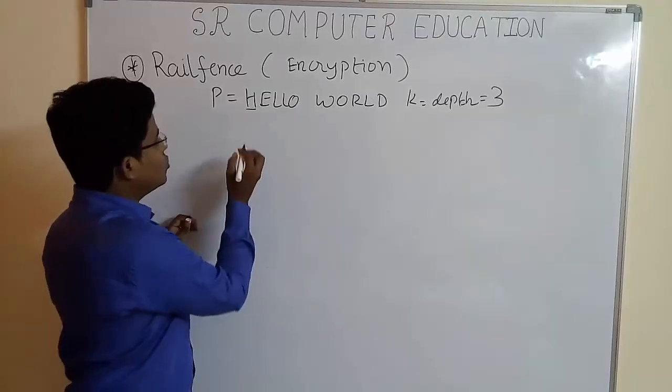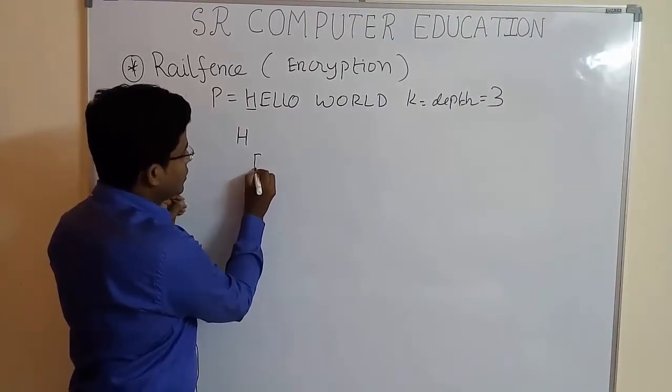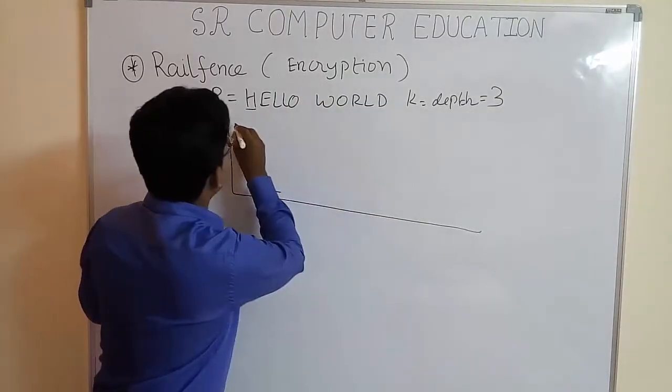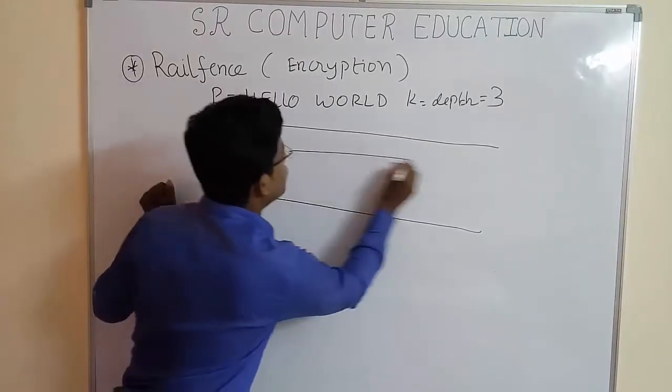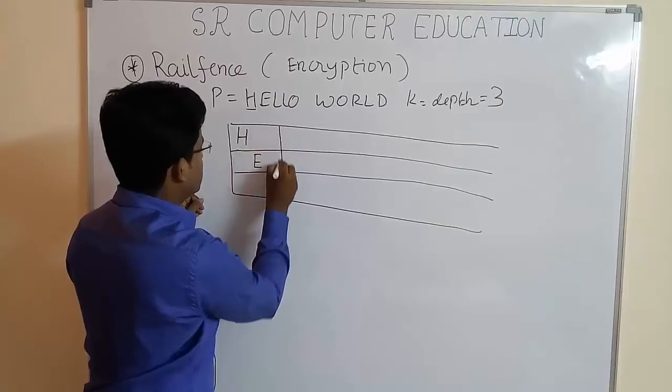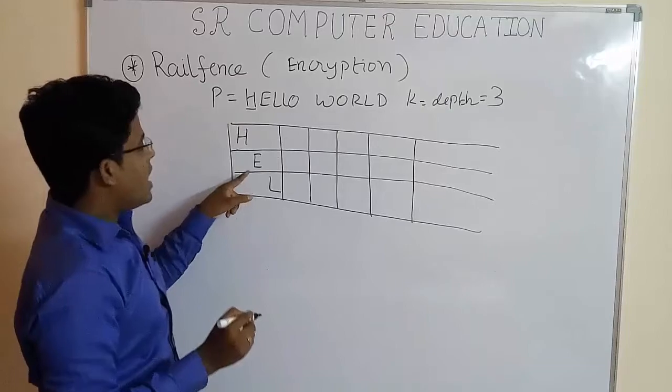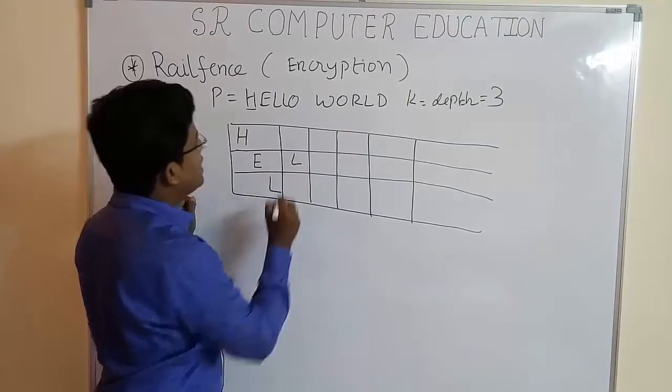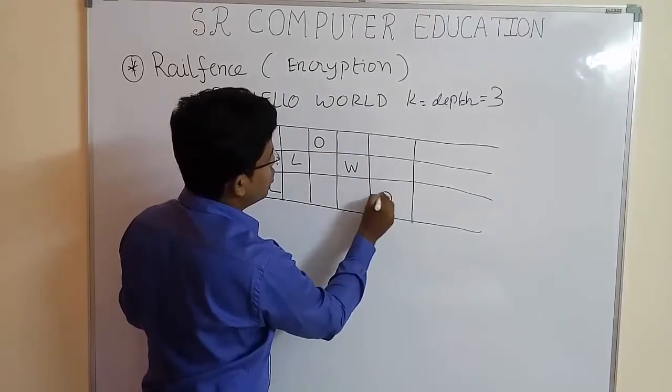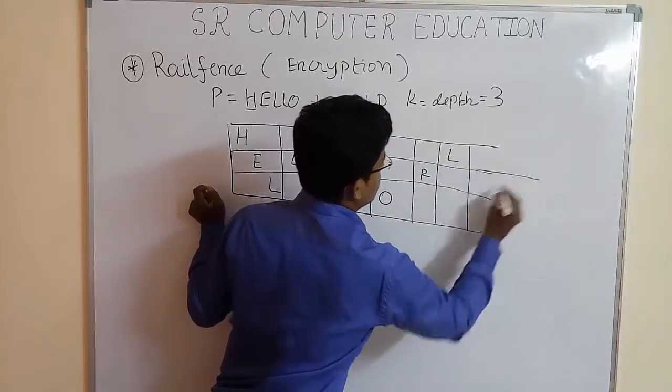When depth equal to 3, what you have to do is write first letter here, second here L and then third again here. What I do here is make a column and row so it would be easy for me to write. Okay H E L, then here you have to write the next letter just above it L then O then next is W so you have to write here. W then O then R then L then L D.